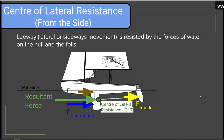Now I'll introduce the center of lateral resistance. Leeway refers to a boat sliding sideways as it moves through the water — more side-slipping means more leeway. Leeway is resisted by the forces of water on the hull and the foils, mostly by the force on the centerboard, but also by the force on the side of the boat and on the rudder. Just like with the sails, we can recognize a force on the rudder, a force on the hull, and a force on the centerboard. Adding those all together gives us one simplified point and one force — and another way to think about it is as a pivot point that the boat will turn around.